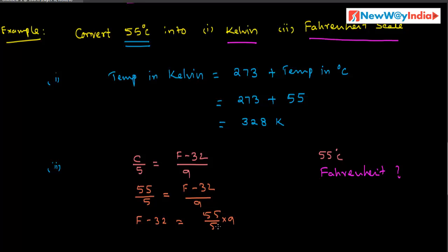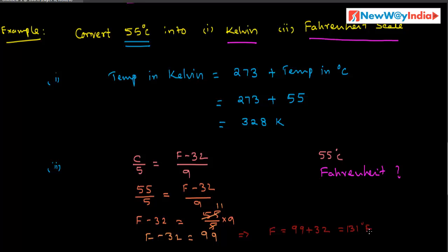Simplifying: 55 divided by 5 equals 11. Therefore F minus 32 is equal to 9 multiplied by 11, which is 99. That implies F is equal to 99 plus 32, which equals 131 degree Fahrenheit. So 55 degree centigrade is converted into Fahrenheit scale as 131 degree Fahrenheit.